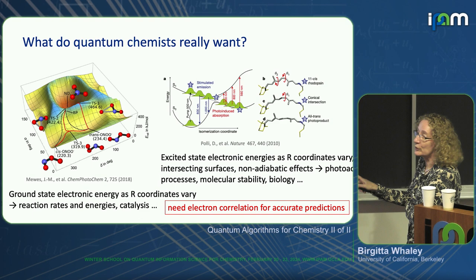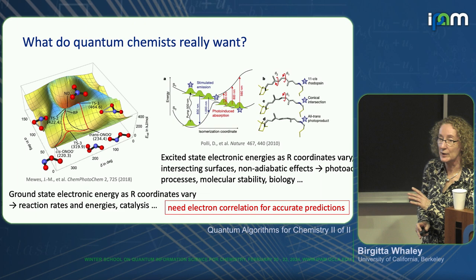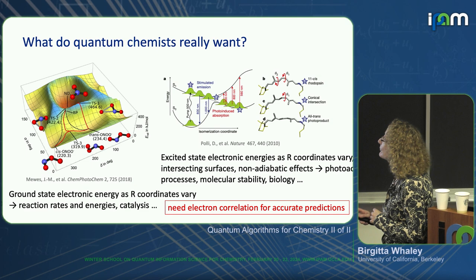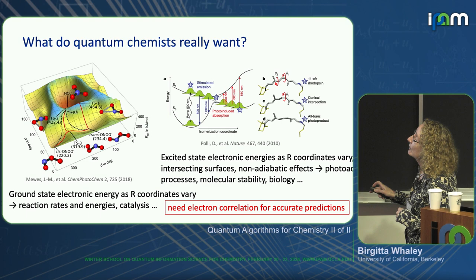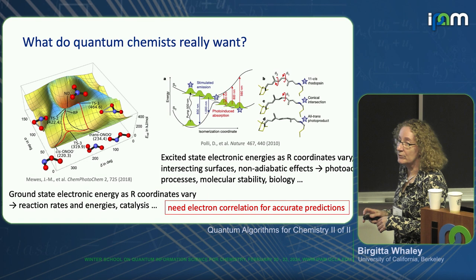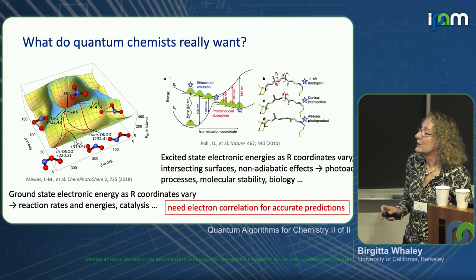That isomerization coordinate goes through a crossing of the ground electronic surface and the excited state surface. This is called a conical intersection — a region where the timescale of electronic motion and nuclear motion is actually similar, which breaks the Born-Oppenheimer approximation. We really have to consider the motion of all electrons and all nuclei together. This is one of the outstanding challenges of theoretical chemistry today.